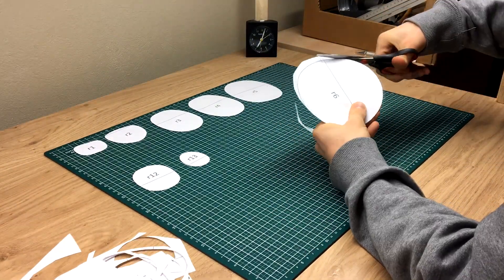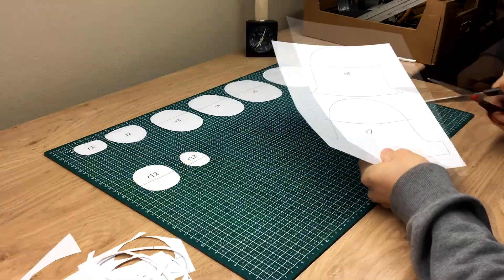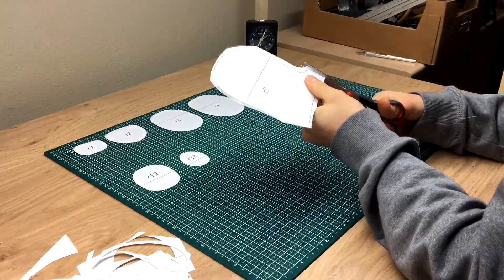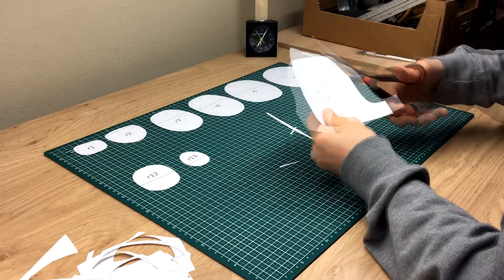These cross-sections will form the ribs inside the fuselage. I have shrunk them by 5mm in every direction to account for the thickness of the skin.